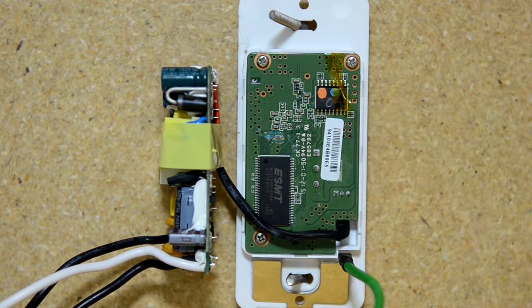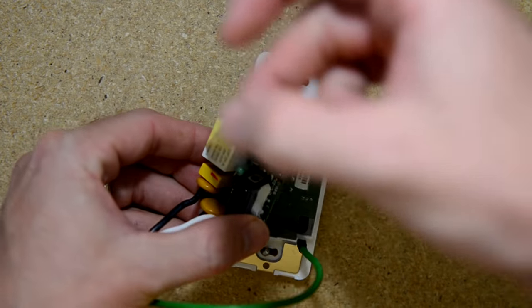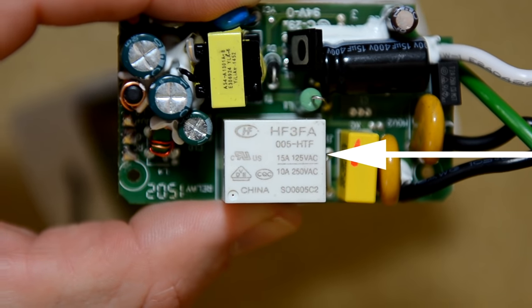Take the tape off and find the relay. That's the important part here. Here's what it looks like. Look up this part number for a datasheet.